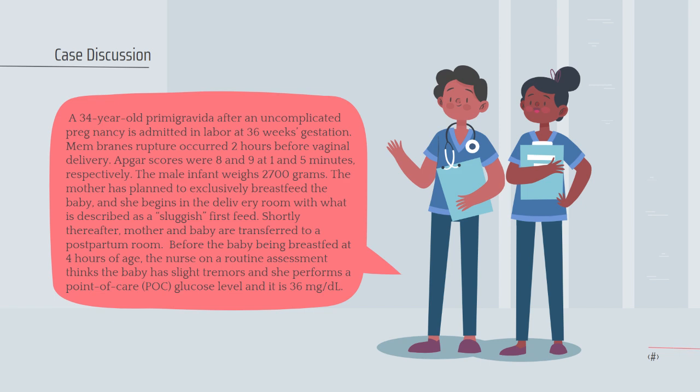A 34-year-old primogravida after an uncomplicated pregnancy is admitted in labor at 36 weeks gestation. The perinatal screening tests are negative, including a negative screen for Group B Streptococcus GBS at 35 weeks gestation. Membranes rupture occurred two hours before vaginal delivery. APGAR scores were 8 and 9 at 1 and 5 minutes, respectively. The male infant weighs 2,700 grams.